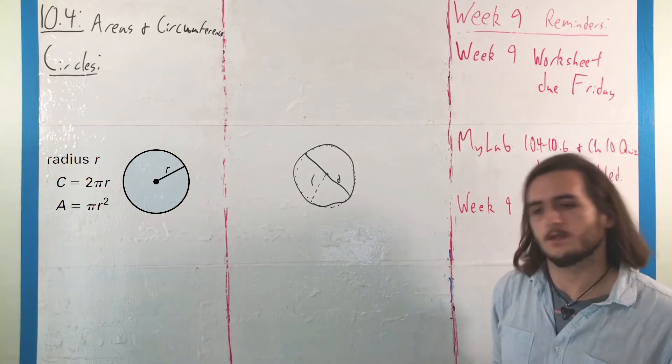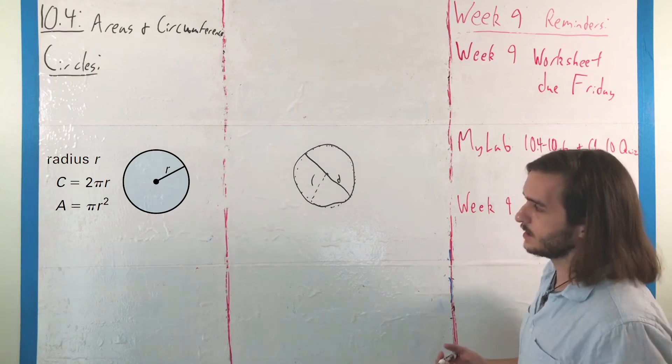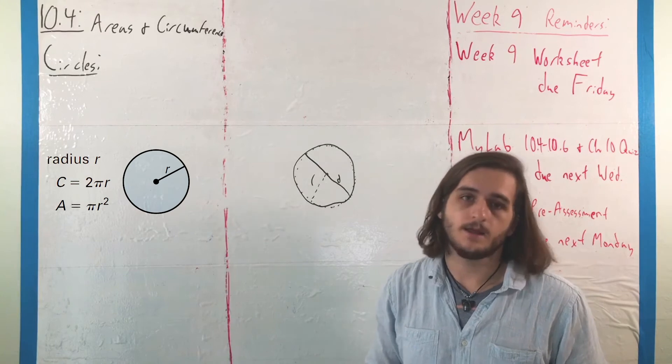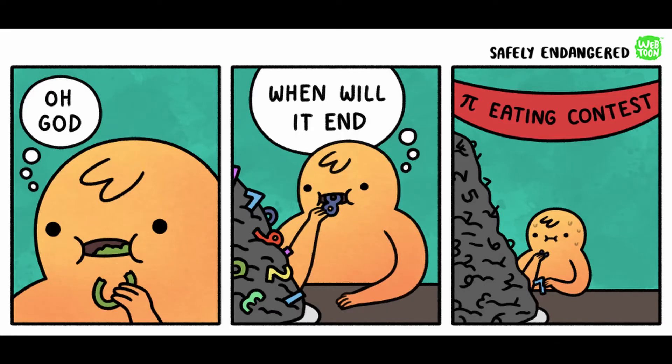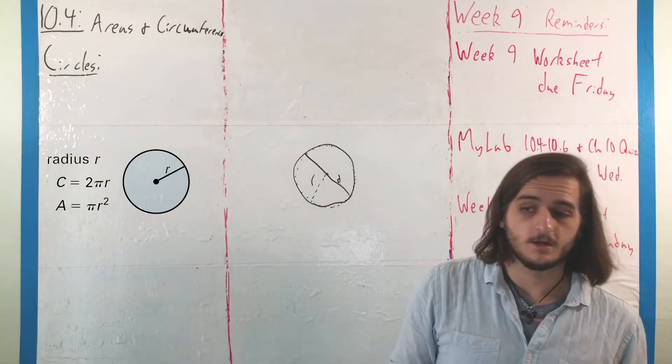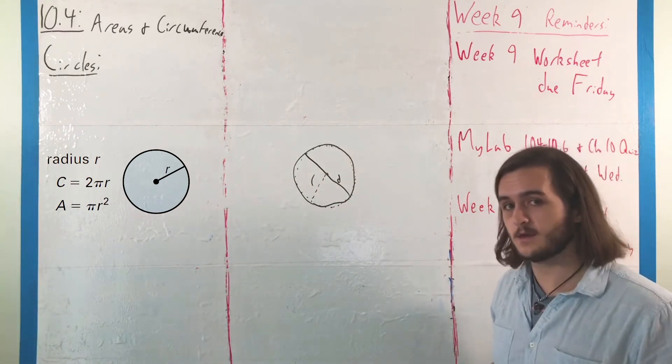And our two big formulas in the context of circles are ones in terms of these measures, the radius and the diameter, and a special number called pi, where pi is a value defined as the ratio of the diameter to the circumference, to the entire outside length of the circle.